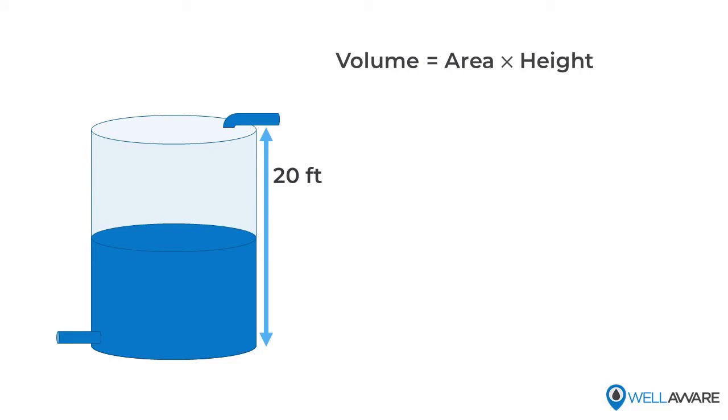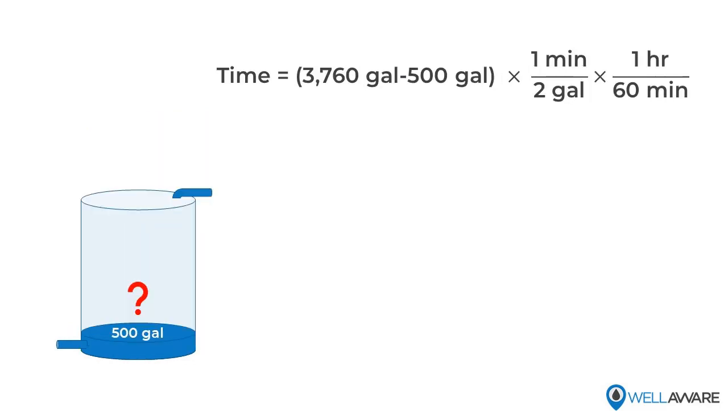First we need to know the capacity of the tank in the correct units. This tank is 20 feet high and we calculated the cross-sectional area as 50 and a quarter square feet, which means the capacity of the tank is 1,005 cubic feet, which is about 7,520 gallons. Now let's go back to our math where we calculate the time until we had 500 gallons left.